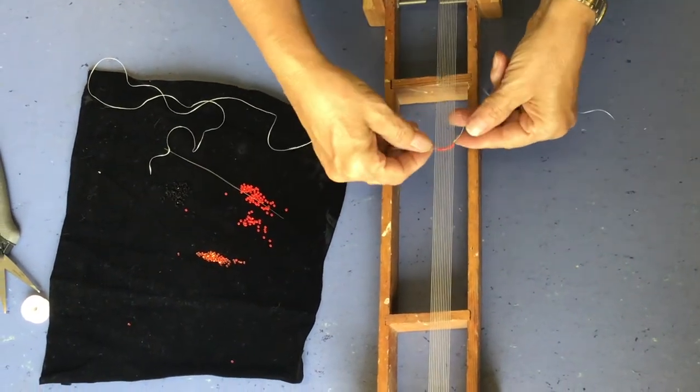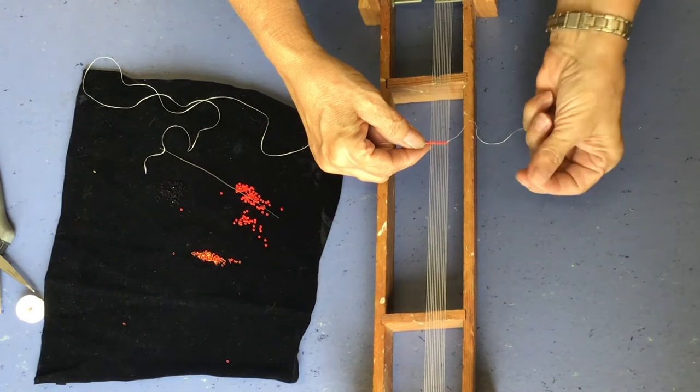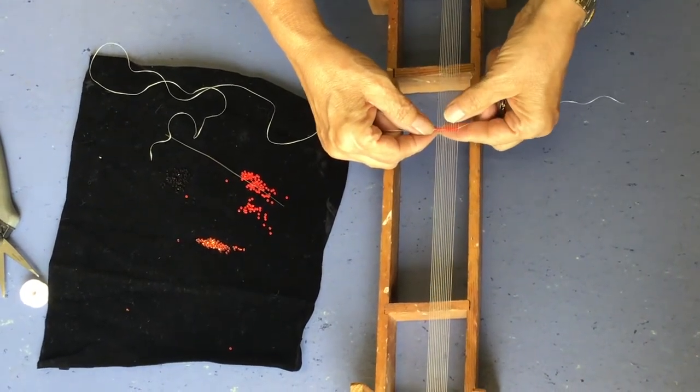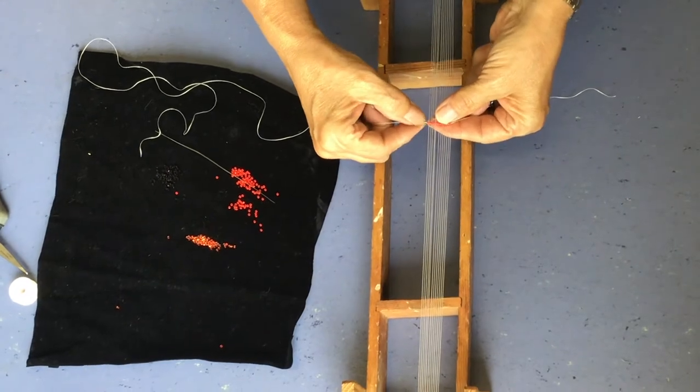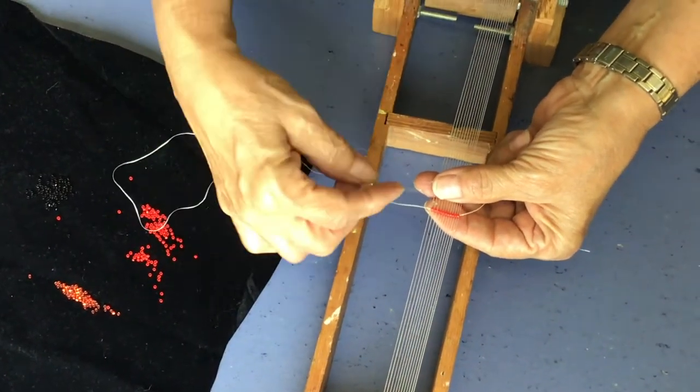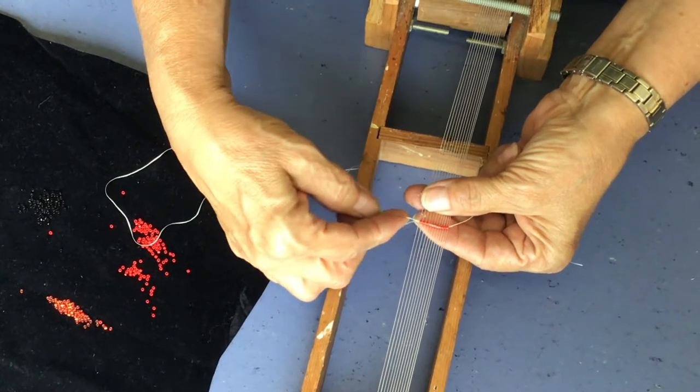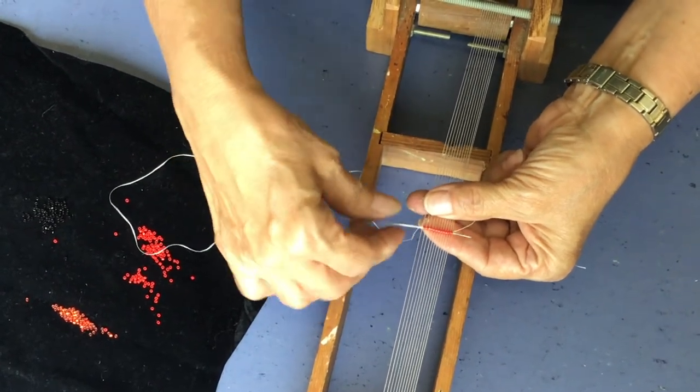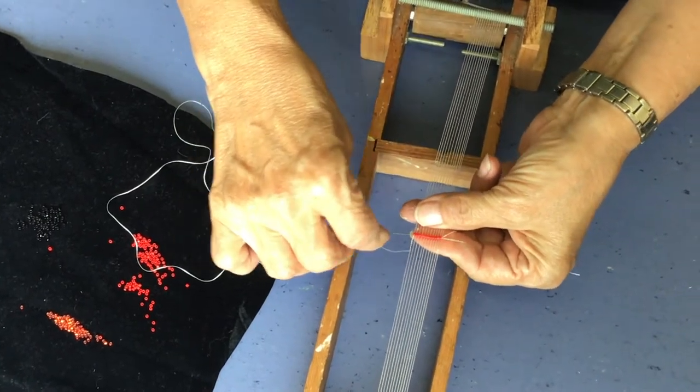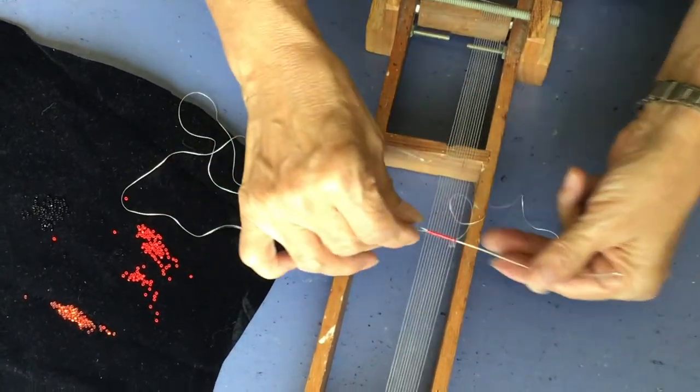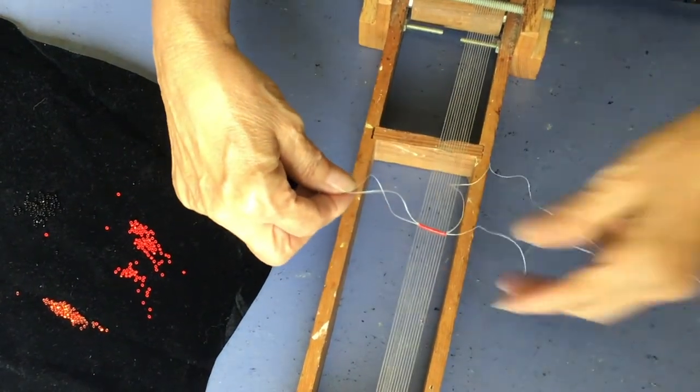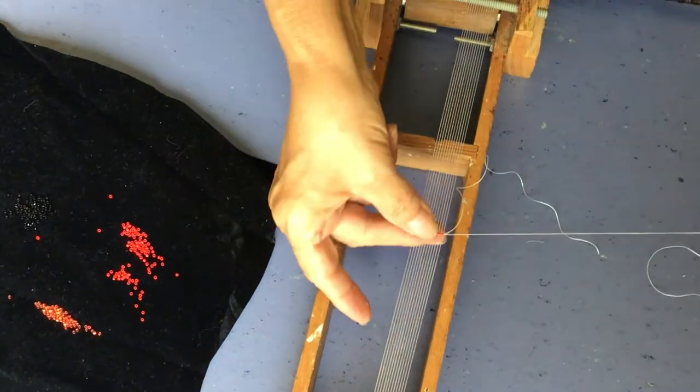Drop the needle for now. So using the finger of your other hand, you're going to push these up through. One in each space. Hold them up. Push them through. Take your needle and go back through the beads. Try not to hit the warp threads. You want to be on top of them. Especially this end one. All right. Pull it all the way through. And that's your first row.